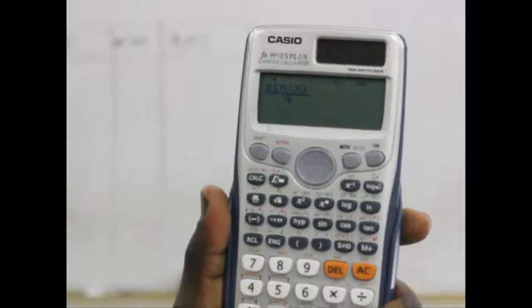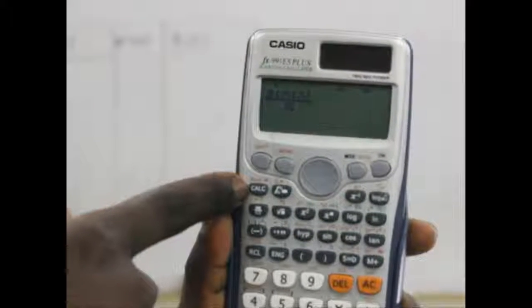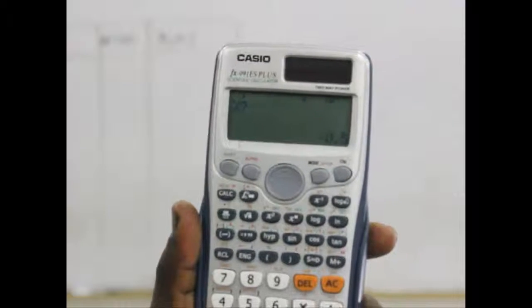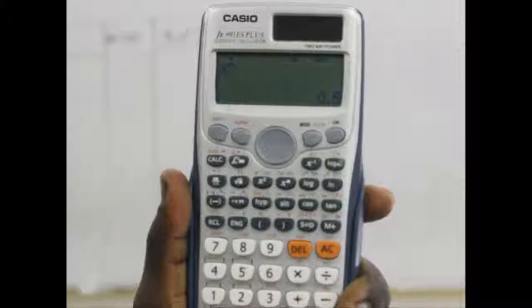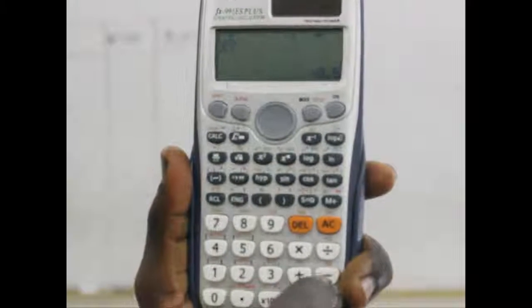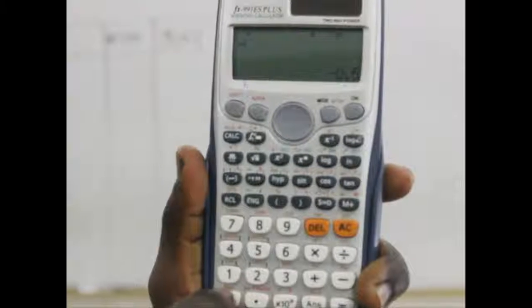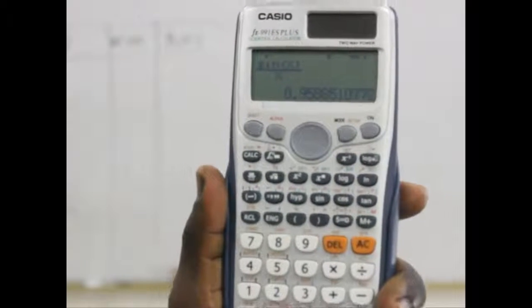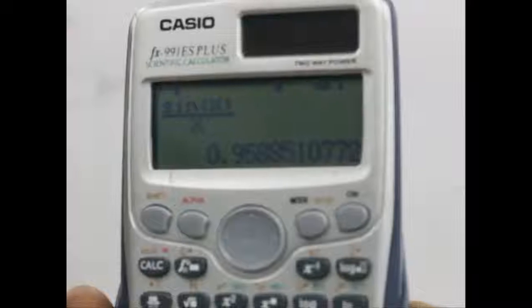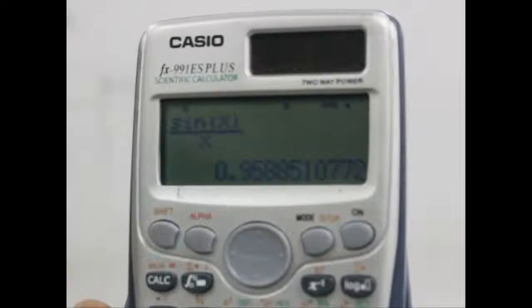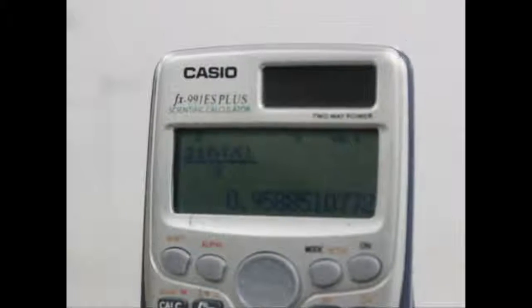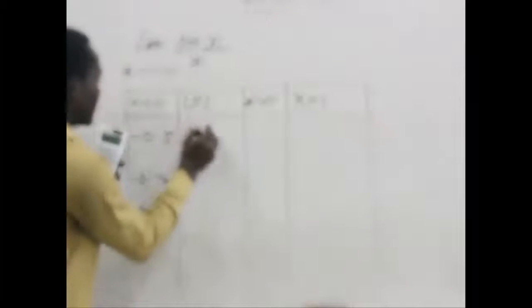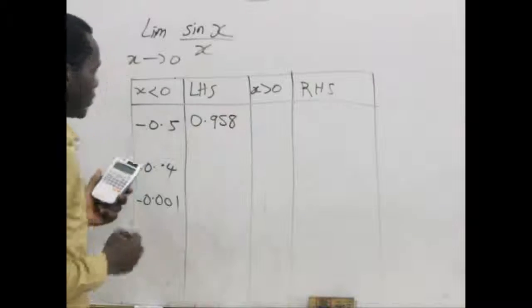Then we come down to write our x which is the denominator in that function. We call out the x which is alpha x. After writing down the function, we want it to calculate the values for us, so we press calc which means calculate. When you press calc, it asks what values you want to compute. Since we are starting with negative 0.5, we write negative 0.5 and press the equal to button. It solves it for us, giving us the value 0.958.